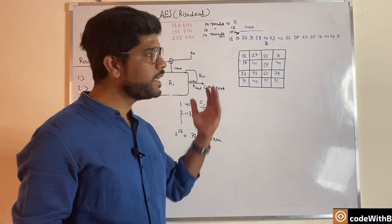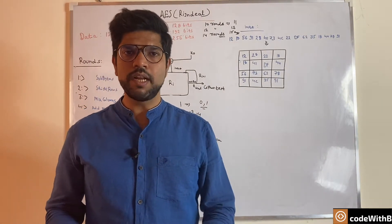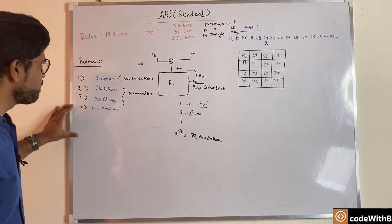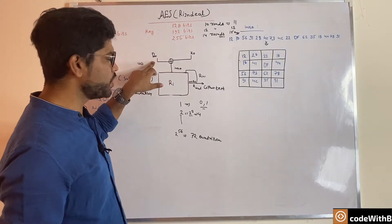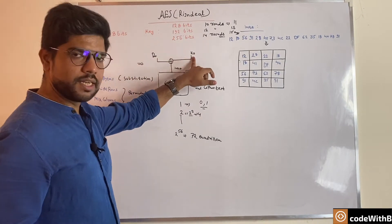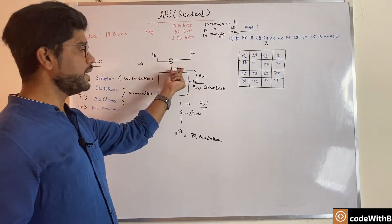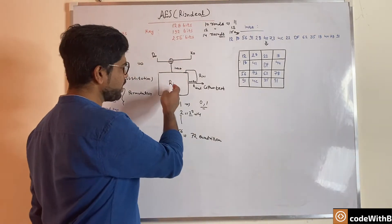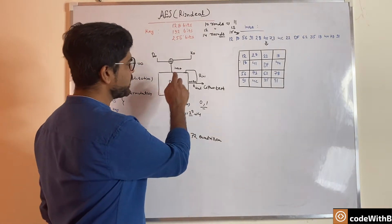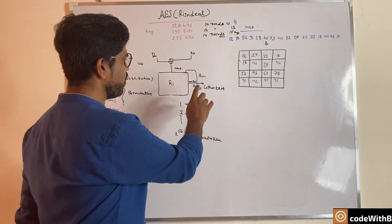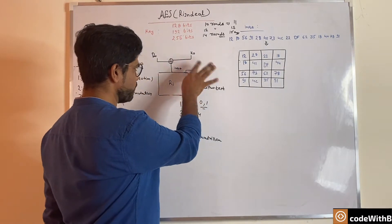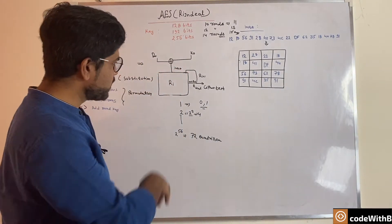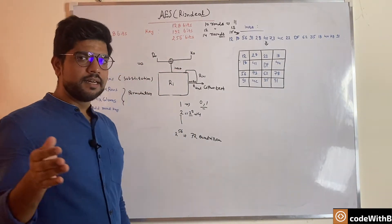I'll explain key expansion in the next video. For now, let us focus on the specific rounds. For each round, first we need the initial data and the initial key. We XOR them together to get the input, and that input is passed to the individual round. After the first round completes, the output goes to the next round Ri+1, where the output of the first round becomes the input for the next. This process continues until the 9th round.